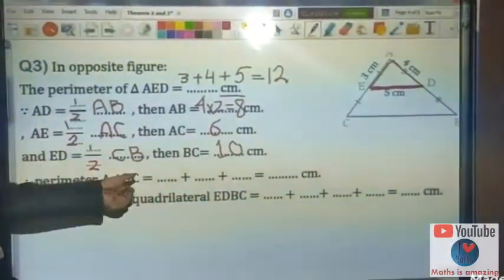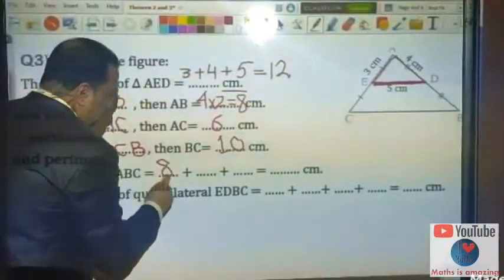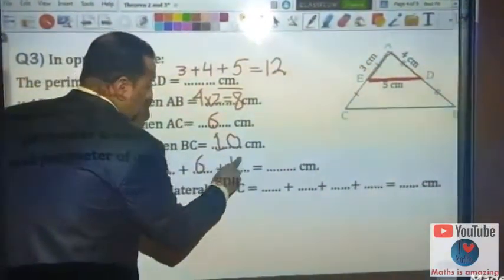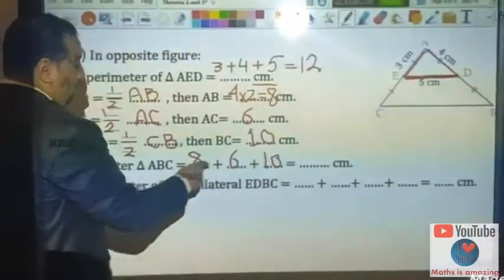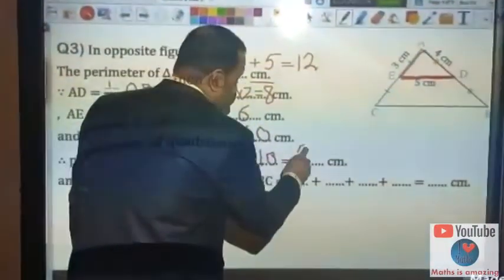So the perimeter of triangle ABC would be 8 plus 6 plus 10 equals 24.